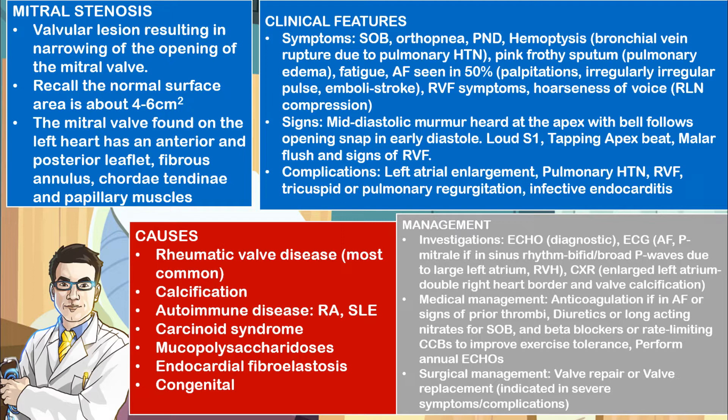Investigations include an echocardiograph, which is often diagnostic of the condition, and an electrocardiograph, which may show atrial fibrillation and P mitrale if in sinus rhythm. This is manifested as a bifid broad P wave due to a large left atrium, and right ventricular hypertrophy may also be seen on the ECG. Chest X-ray may show an enlarged left atrium, which may manifest as a double right heart border, and valve calcifications may also be seen.